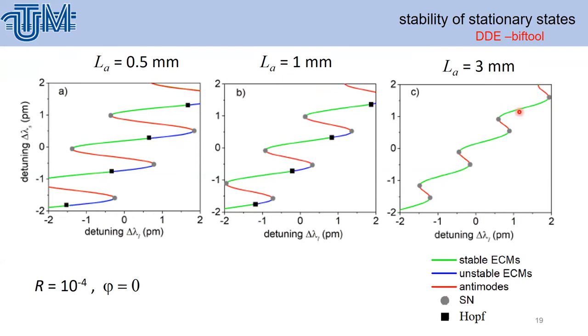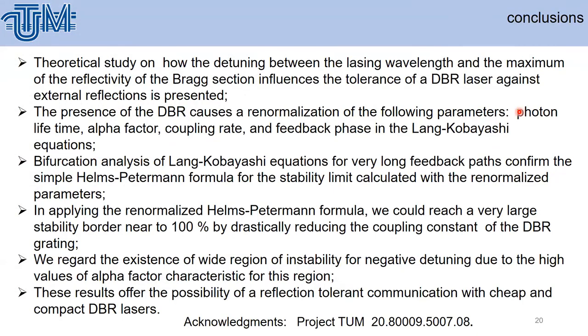In conclusion, a theoretical study on how the detuning between the lasing wavelength and the maximum DBR reflectivity influences the tolerance of DBR lasers against external reflections is presented. The presence of DBR causes a renormalization of the parameters. Bifurcation analysis shows that for long feedback we can confirm the Helms-Petermann formula. By applying the renormalized coefficients, we could reach a very large stability border of up to 1 percent by drastically reducing the coupling constant.